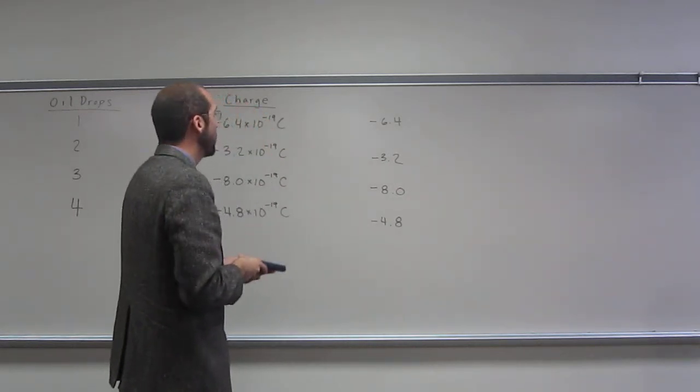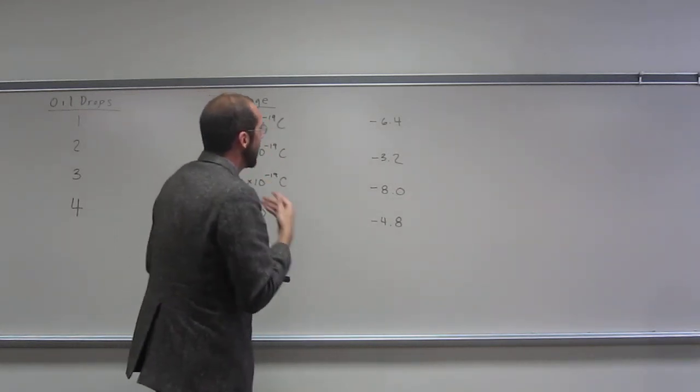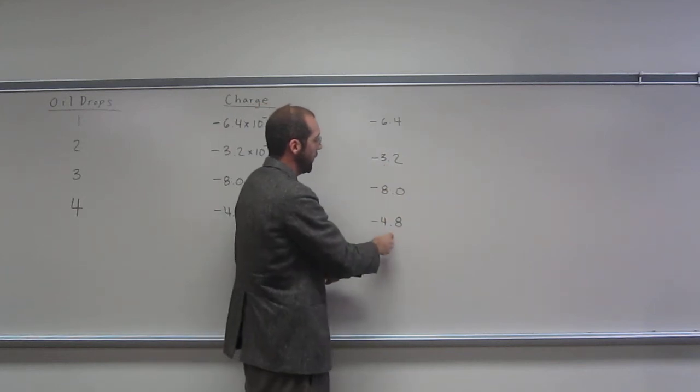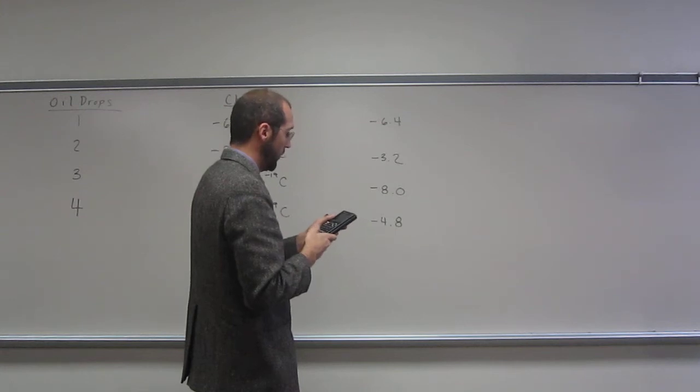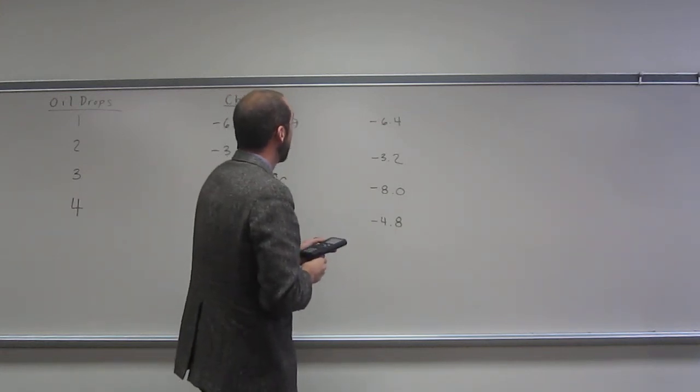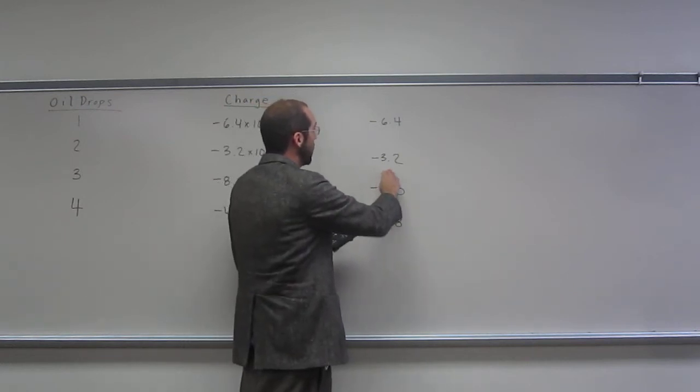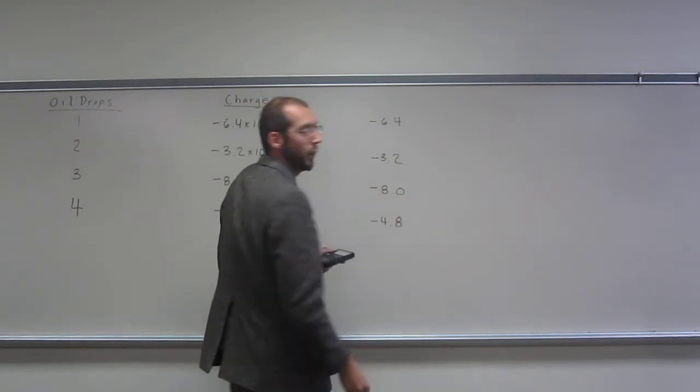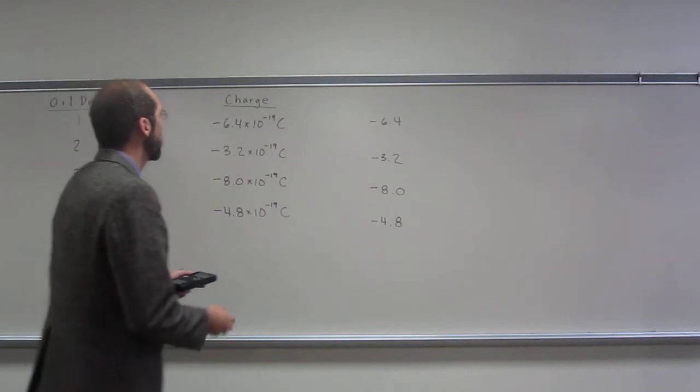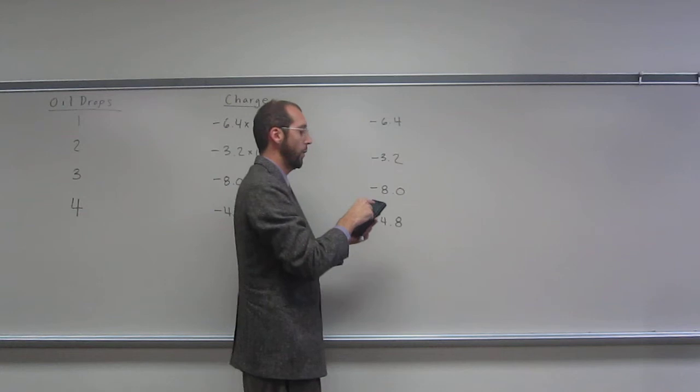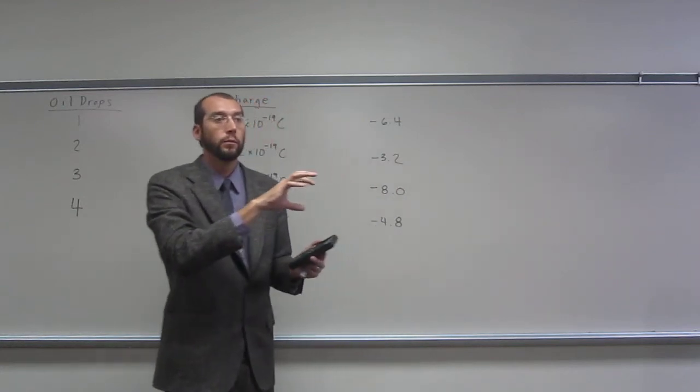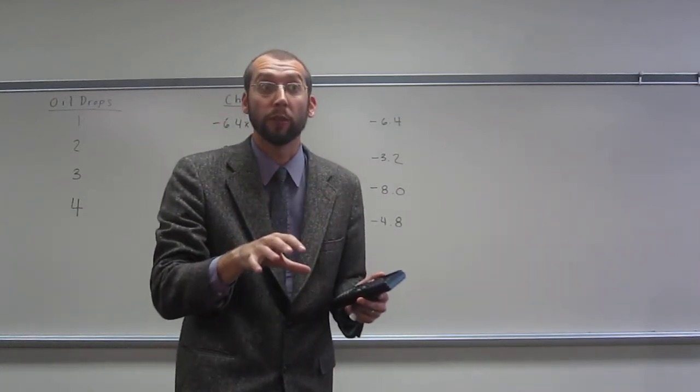So when we do this, what we can do is see, well, the difference between here and here. So 4.8 minus 3.2 is 1.6. So that's smaller than 3.2. And in fact, that's going to be the answer. You can already hopefully see it looking at those. But what you can say is, okay, can I divide each of these into 1.6 and get a whole number like an integer?